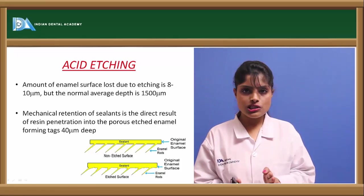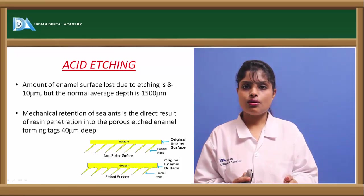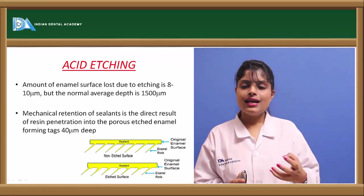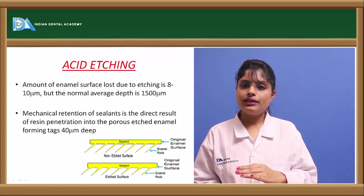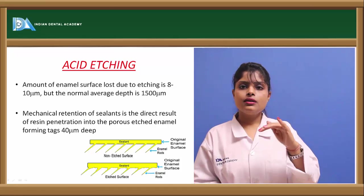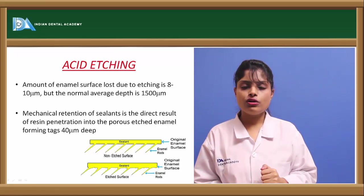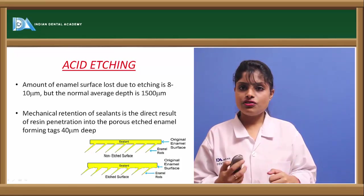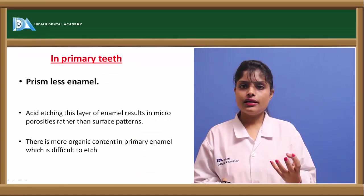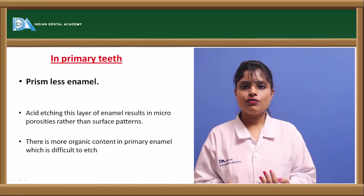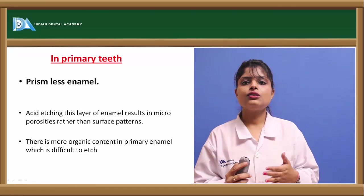The first and most important step is acid etching. In this procedure, phosphoric acid is used from 30 to 80%. The phosphoric acid etches the enamel. Generally, the depth of the enamel is 1500 nm, and the acid etches the enamel to a depth of 10 nm only. This causes minute porosities in the enamel, and the resin flows into these porosities — tagged to a depth of 40 micrometers. After etching, the surface will appear frosted white in appearance. The etching is usually done for 30 seconds, but in primary teeth it requires less time because they have more organic content, and in primary teeth etching is by means of porosities, not by means of resin tags.